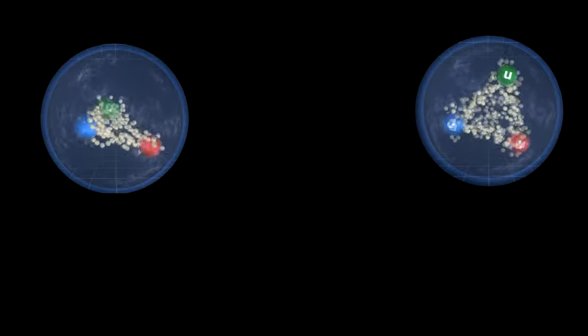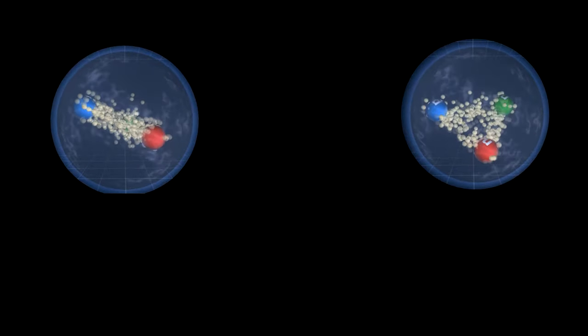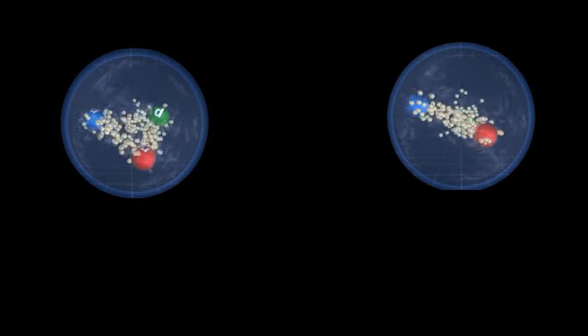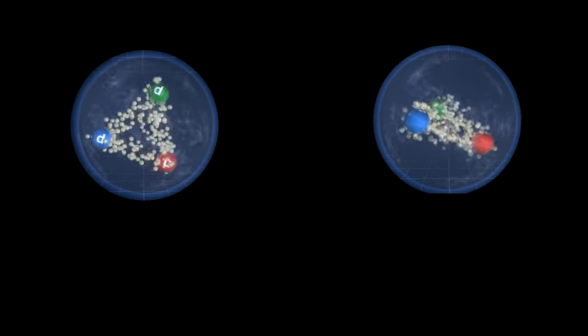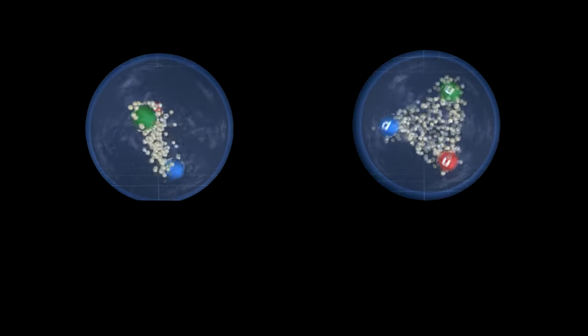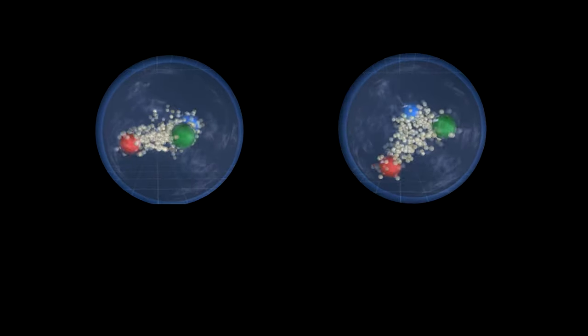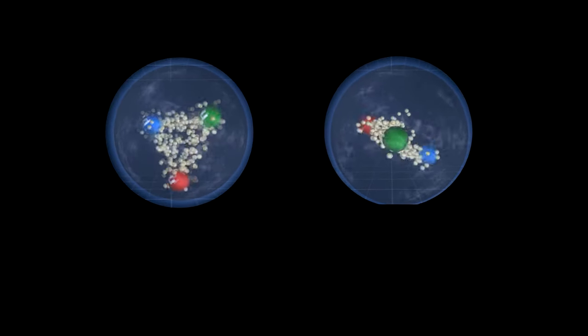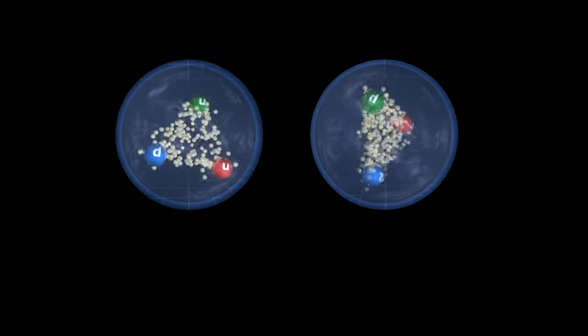According to the standard model of particle physics, there are several ways for a Higgs particle to form and to decay through W, Z, and quark particles. Here is a two-photon one. It's rare, but easily identified when it happens.